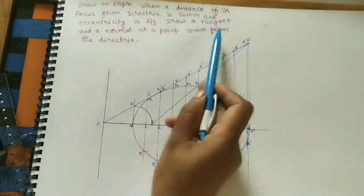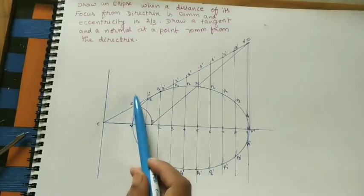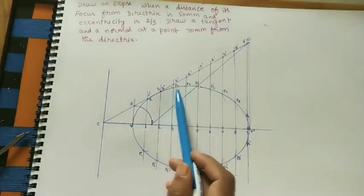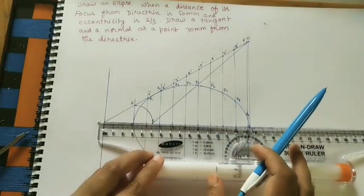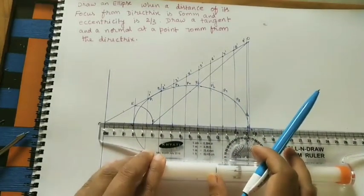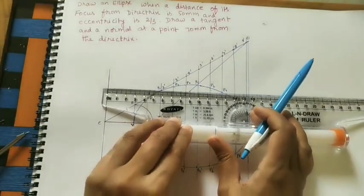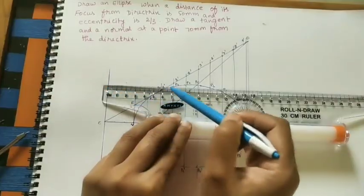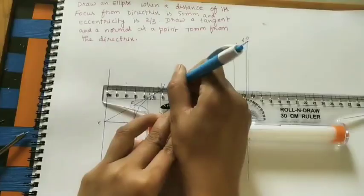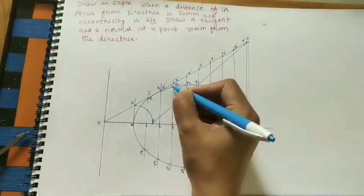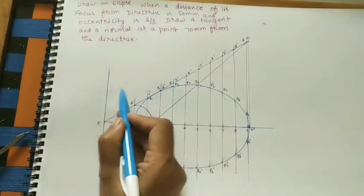So this is the required ellipse. Mark the intersection points: P1, P2, P3, P4, P5, P6, P7, P8, P9, and similarly P1 dash through P9 dash on the other side. For this ellipse, we need to draw the normal and tangent. In the question: draw a tangent and normal at a point 70 mm from the directrix. From the directrix, the point on the curve is 70 mm — at this point we need to draw the normal and tangent.